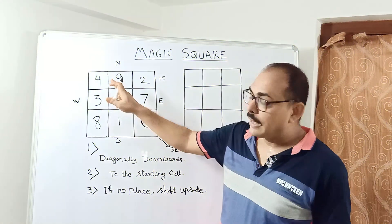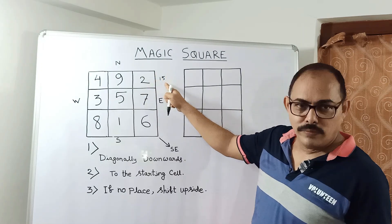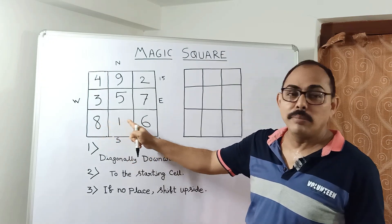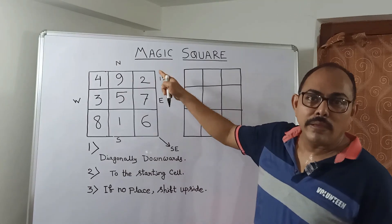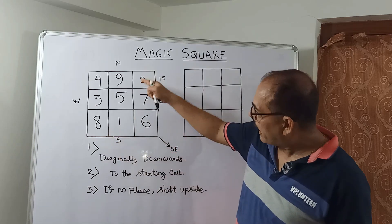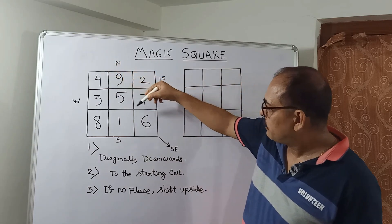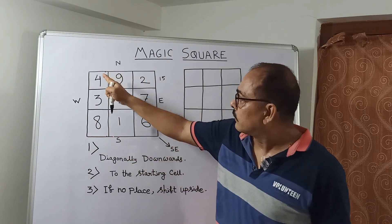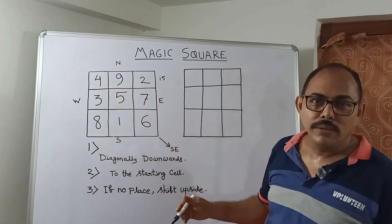Take the example here. 4 plus 9 plus 2 — the sum is 15. Similarly, 3 plus 5 plus 7 is 15. 8 plus 1 plus 6 is 15. Not only row wise — column wise also you get the same result. For example, 4 plus 3 plus 8 is 15. So in a magic square, the sum of all the numbers row wise, column wise, or diagonal wise will be the same.